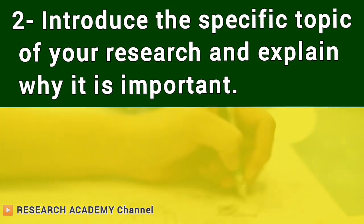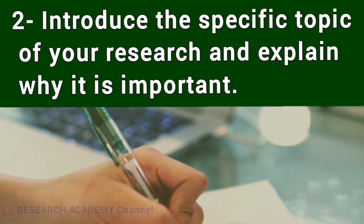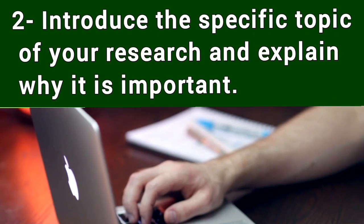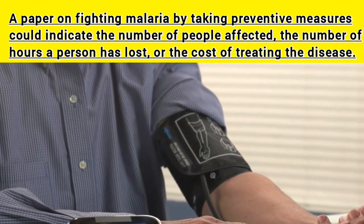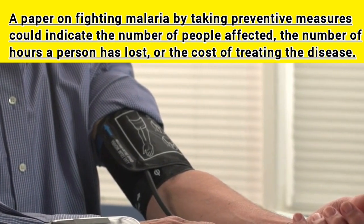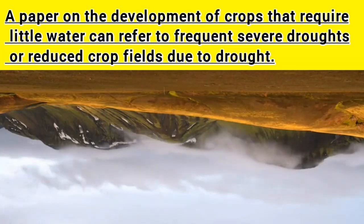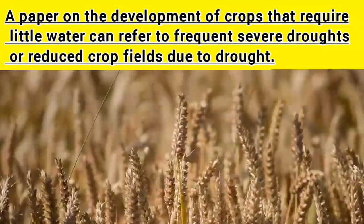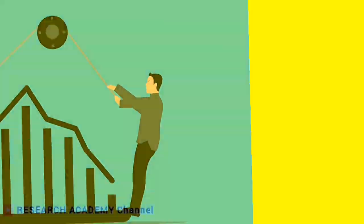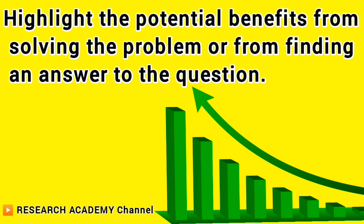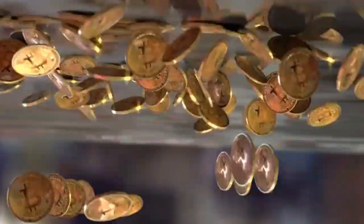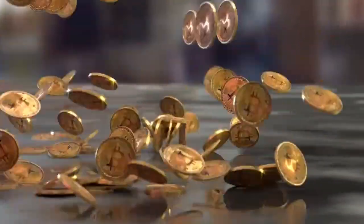Step 2: Introduce the specific topic of your research and explain why it is important. You can bring in insights to show the importance of the topic or the severity of the problem. For example, a paper on fighting malaria could indicate the number of people affected, hours lost, or the cost of treating the disease. Another way to emphasize importance is to highlight potential benefits from solving the problem — possible savings, increased production, longer equipment life. For instance, instead of saying '$80 million are lost to malaria each year,' say '$80 million per year could be saved if malaria were prevented.' This approach confirms the positive.